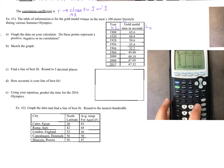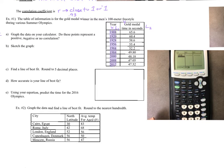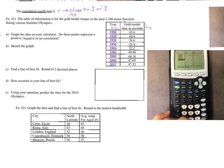Enter each year and hit enter after each one: 1908, 1920, 1928, 1956, 1968, 1984, 2000, 2008, 2012. I cannot stress how important it is to put these in carefully — if you mess up one digit it's going to cause a lot of problems. Take your time.